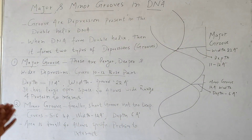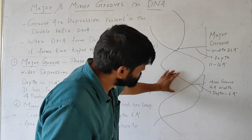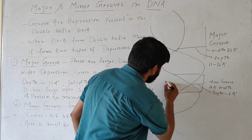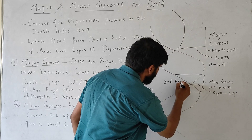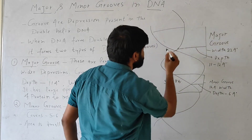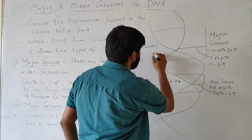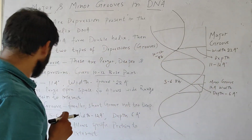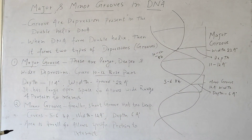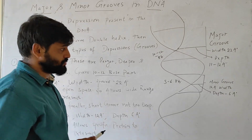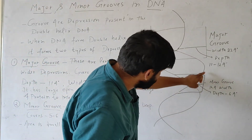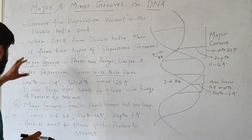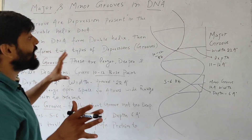The minor groove covers 5 to 6 base pairs. In this area you will see there will be 5 to 6 base pairs. The width of the minor groove is 12 angstroms and the depth is 6 angstroms.